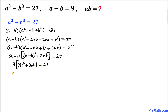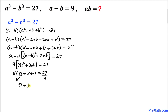Let's simplify further. 9 times the quantity 81 plus 3ab equals 27. Dividing both sides by 9, the 9s cancel, giving us 81 plus 3ab equals 3.